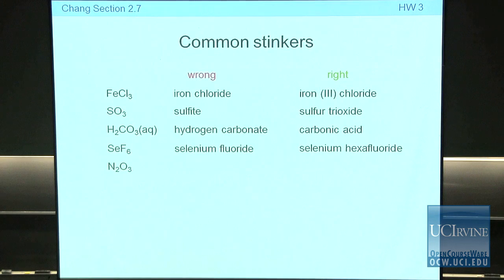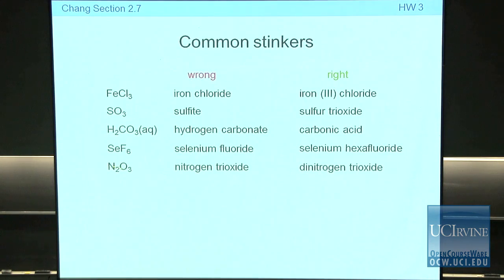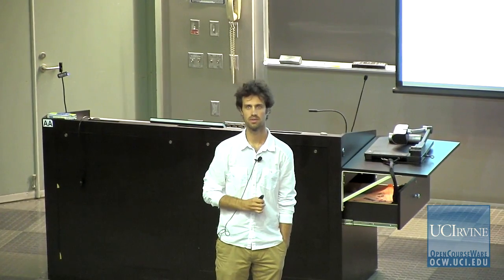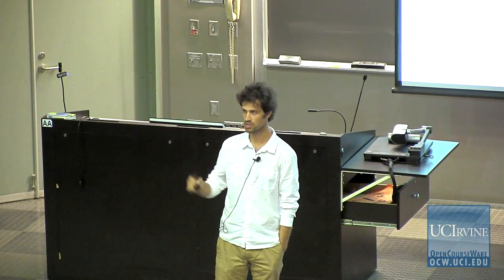Here's another stinker: a compound of selenium and fluorine is a covalent compound. Many people call it 'selenium fluoride,' but it's selenium hexafluoride — the 'hexa' must be included because this is a covalent compound. And for dinitrogen trioxide: some people call it 'nitrogen trioxide,' dropping the 'di.' Remember — only the 'mono' prefix is dropped from the first element. Nothing else.